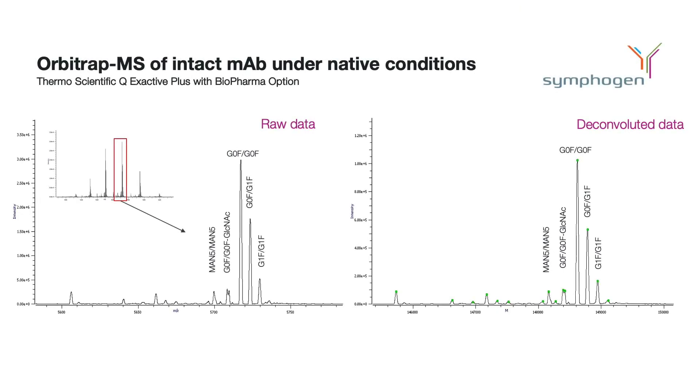For instance, you can take a charge state and determine the glycan distribution from that. Then you can look at the deconvoluted spectrum and you will get exactly the same glycan distribution on Orbitrap-based data.